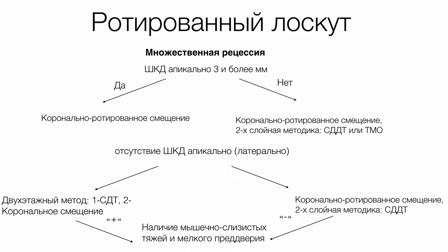Мы уже поговорили о таких параметрах, как ширина кератинизированной десны, толщина, наличие мышечно-слизистых тяжей, мелкого преддверия. Эта схема поможет вам при выборе методики: нужен ли аутотрансплантат для ротации лоскута, или достаточно обычного корорально ротированного перемещения лоскута.